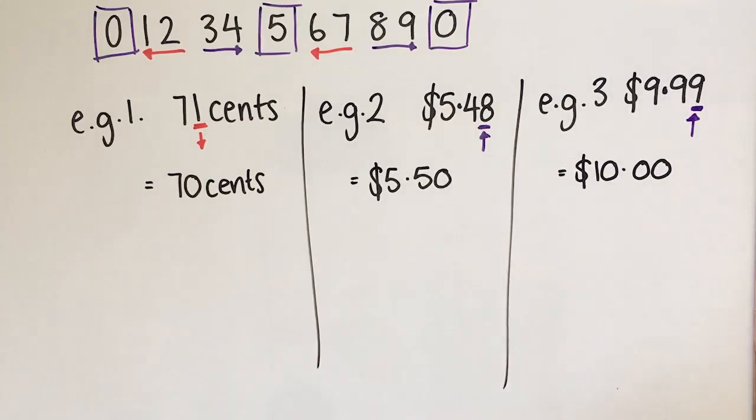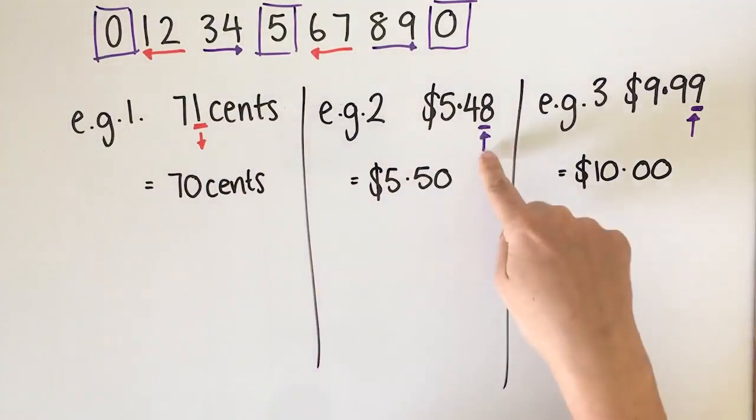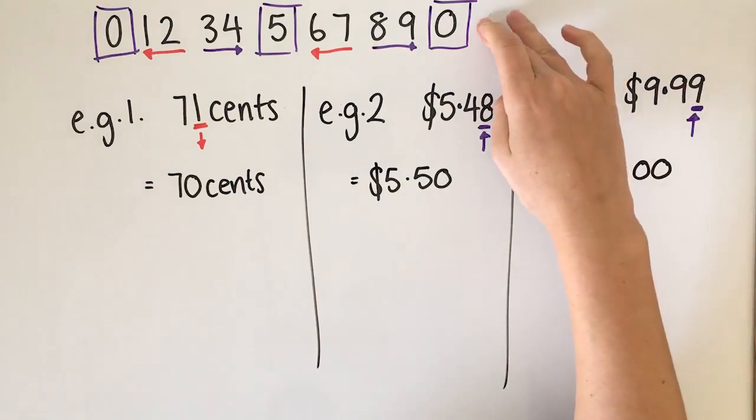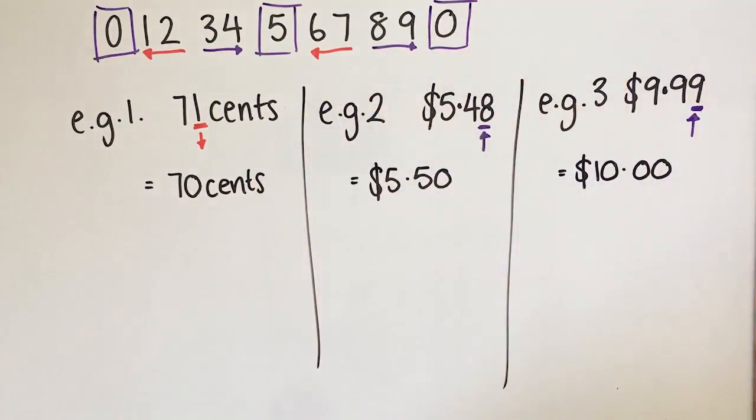If we think back to our learning intention and our success criteria it was to be able to understand the decimal places, then it was to know whether to round up or down, and then actually perform the rounding. So if you can do all of that then you've met today's success criteria.